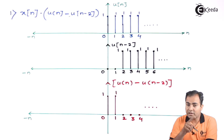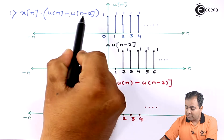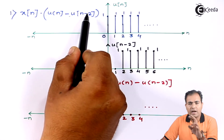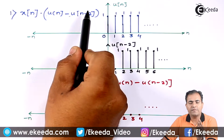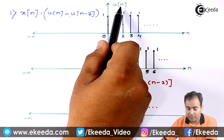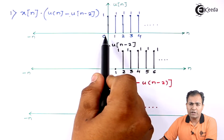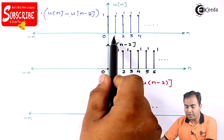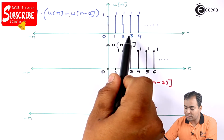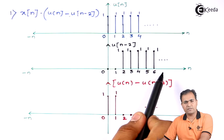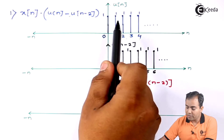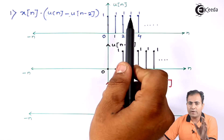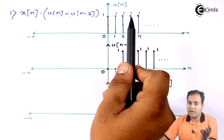To shift the graph towards the right hand side, simply add 2 to each and every time instance of the unit step. So 0 plus 2 gives a new time instance of 2. Similarly, adding 2 to all remaining samples gives new instances 3, 4, 5, 6, and so on. The amplitude is not affected — in the time shifting property, amplitude remains the same and only time changes.